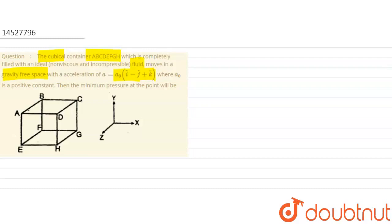So this question is: a vector form acceleration is given for a box filled with liquid fluid. Acceleration is given and you find the least pressure. This is the right logic.